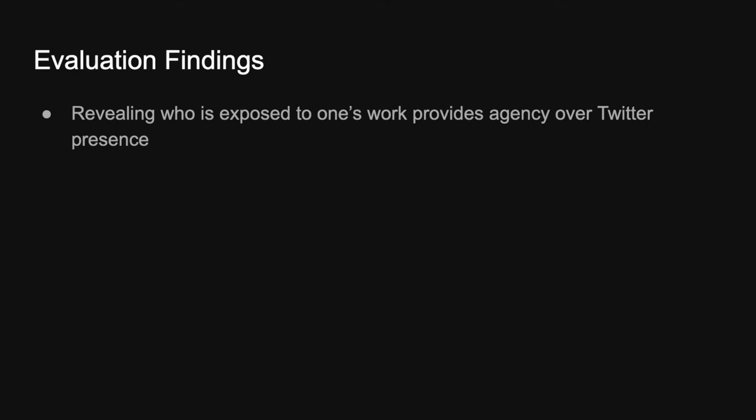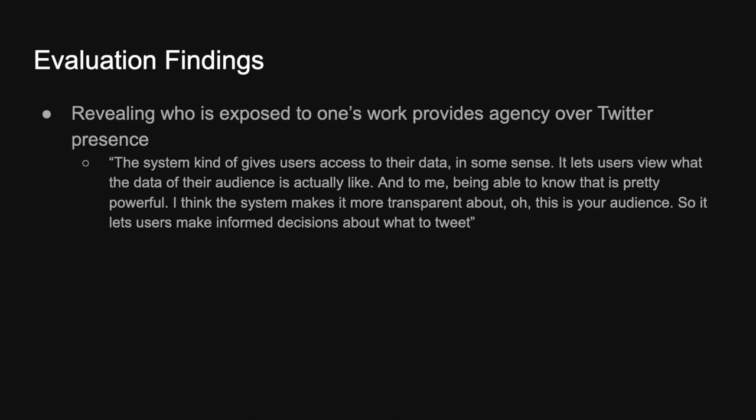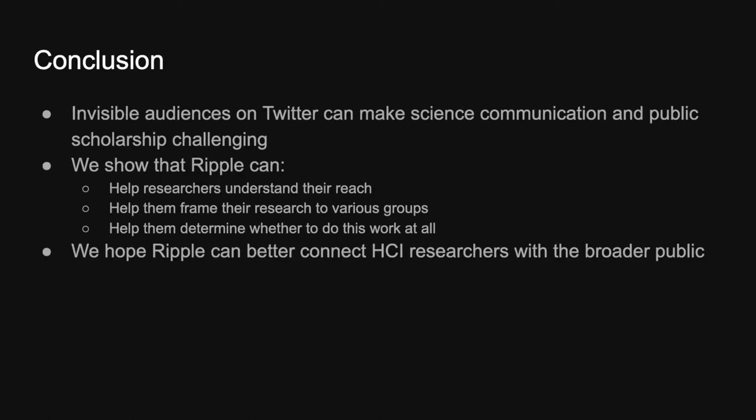Although not one of our main goals, we also found that revealing who's exposed to one's work can provide some sense of agency over their Twitter presence. As one person said, the system gives users access to their data in some sense — being able to know that is pretty powerful. It makes things more transparent, letting users make more informed decisions about what to tweet. A couple of participants even found that some tweets reached audiences they didn't really want to reach — certain political or religious groups — and they decided to be more careful about what they tweet in the future, or even rethink doing public scholarship at all. To wrap up: the invisible audience on Twitter can make science communication really challenging, but with Ripple we've shown we can help researchers understand their reach, frame their research to various groups, and determine whether to do this kind of work at all.